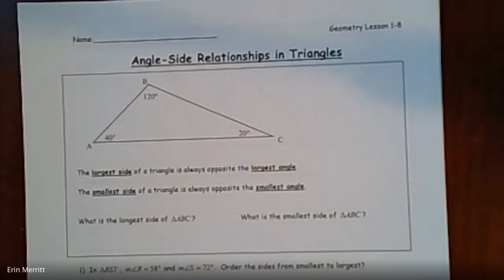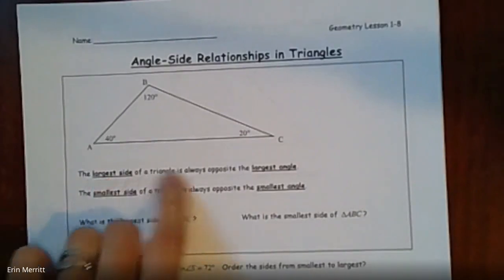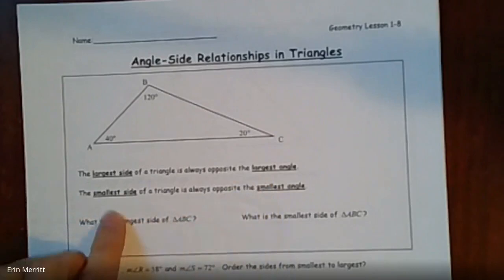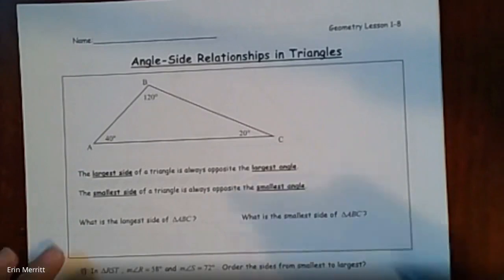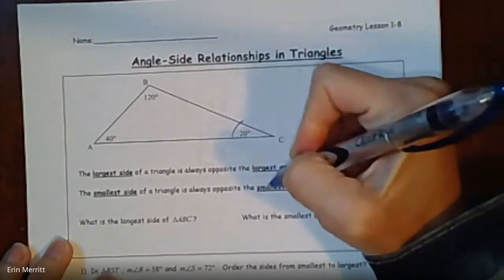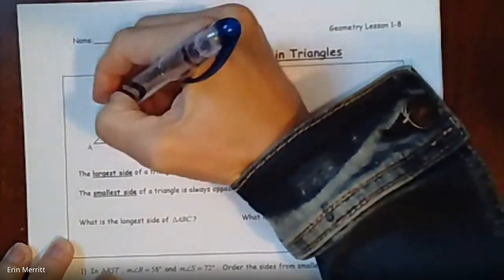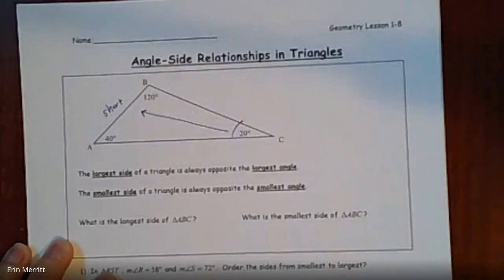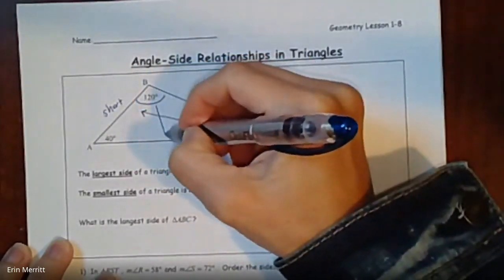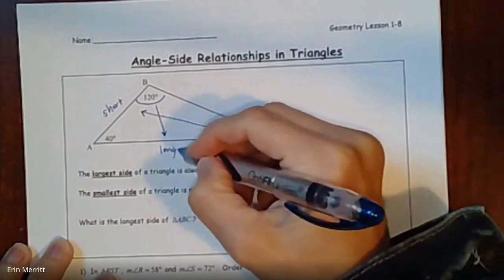It's day one, section 8 notes, talking about angle and side relationships in triangles. The nice thing is you can visually look at them and understand the relationship. The first rule is that the length of a side is compared to the angle across from it. The largest side is always opposite the largest angle, and the smallest side is always opposite the smallest angle.